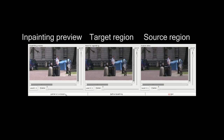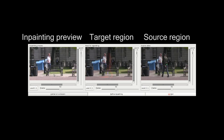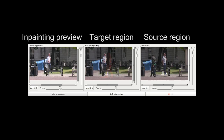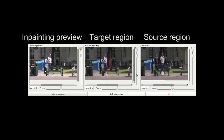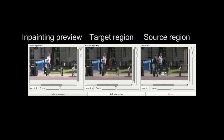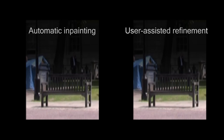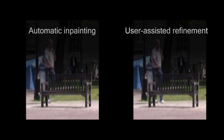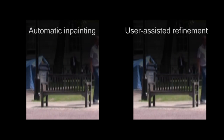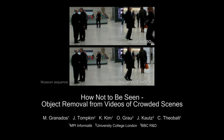Our method is non-parametric and could fail to produce semantically meaningful results. We provide an interface where the user can refine the automatically inpainted result. The user selects a region which they wish to correct and selects a suitable source. Using these additional constraints, we re-run the inpainting algorithm locally and improve the results. Thank you for your attention.